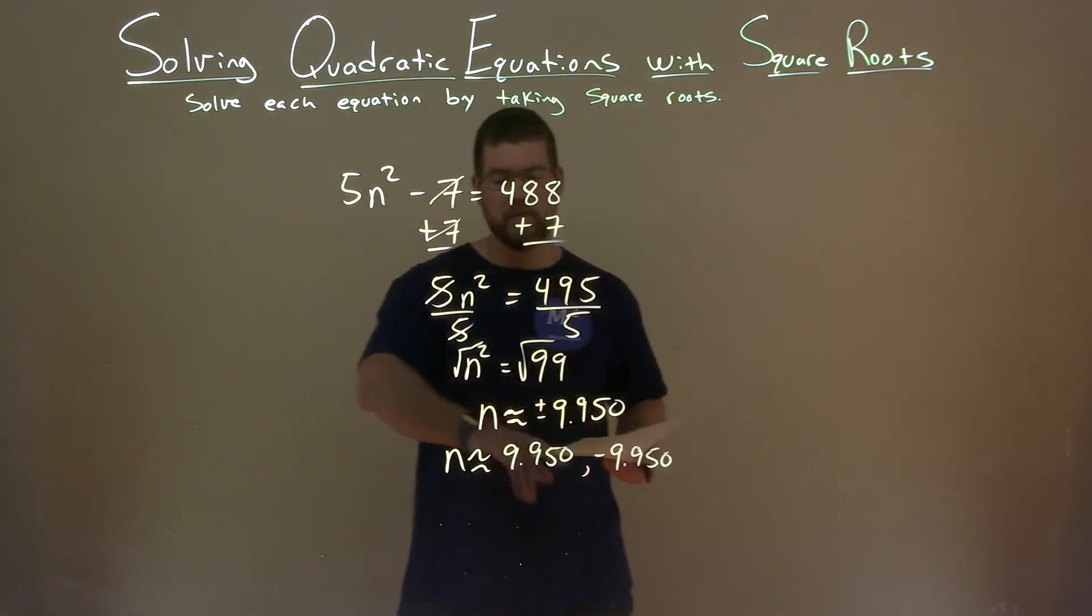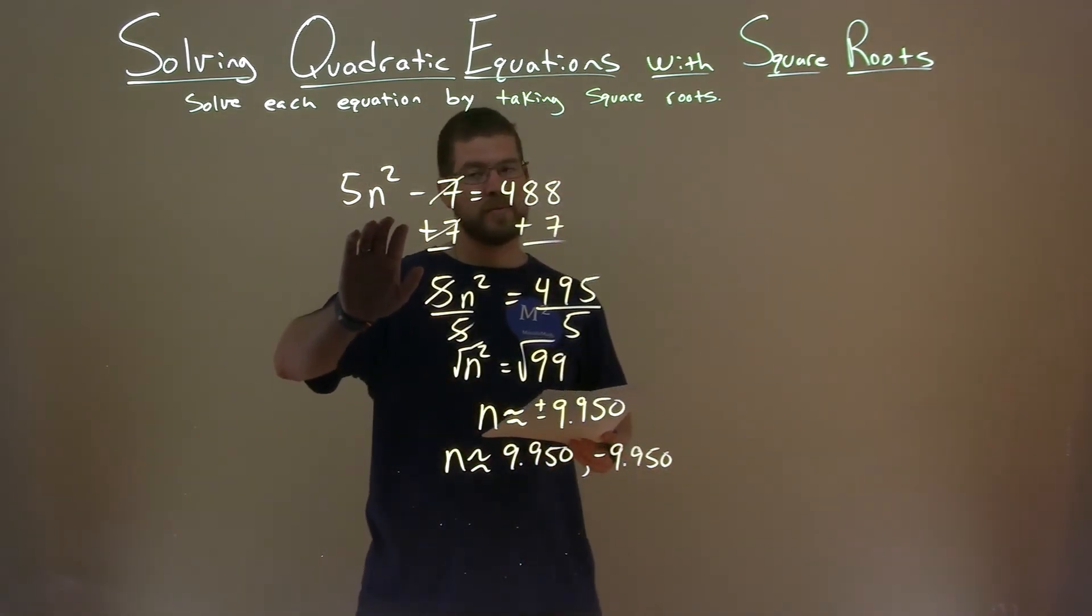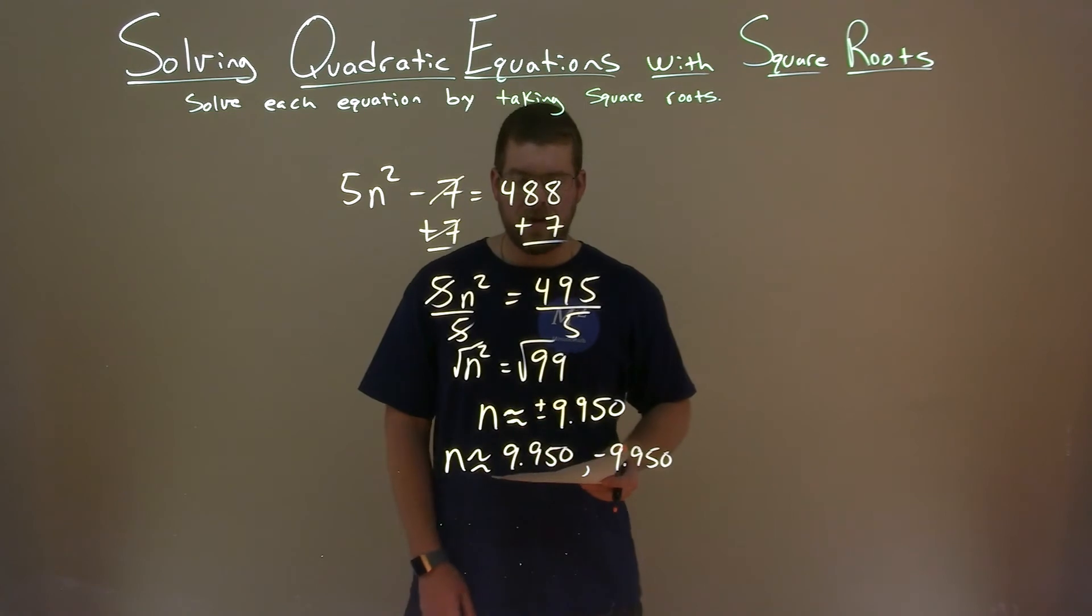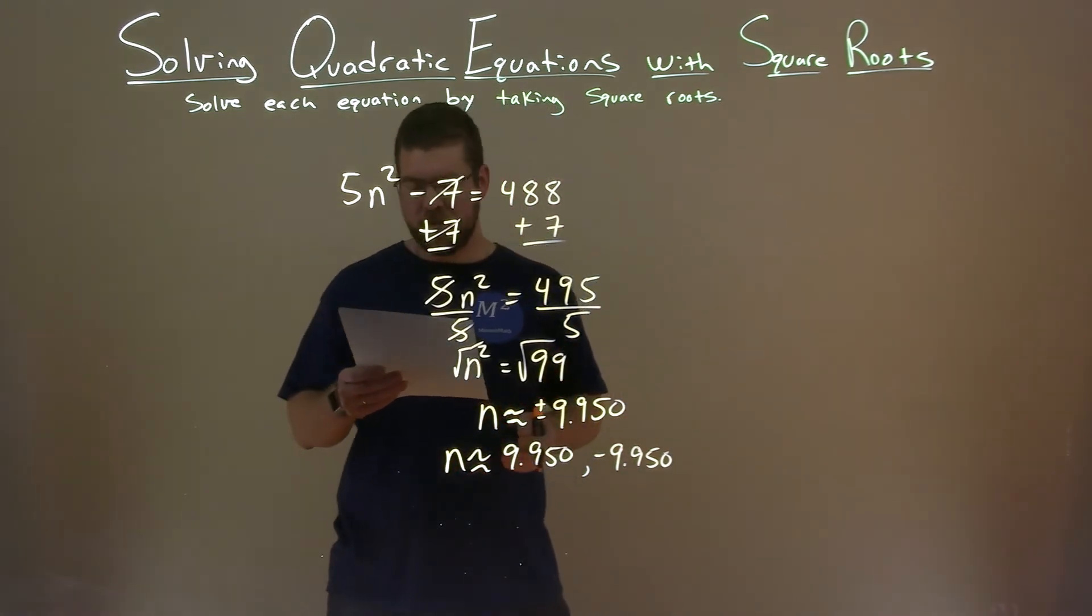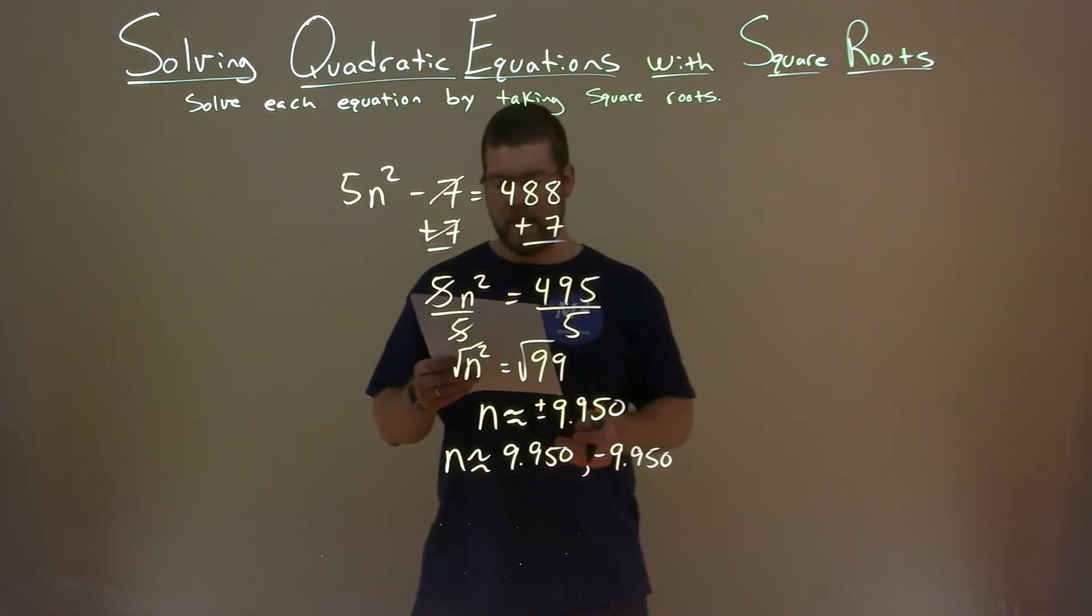And so, here we have our two values that work and make our solution true, our equation true, when we plug it in. So, again, our final answer, n is a positive 9.950 and a negative 9.950.